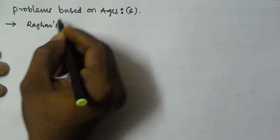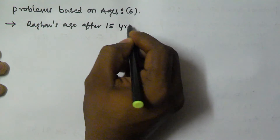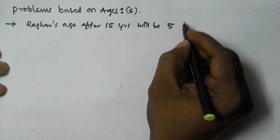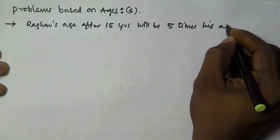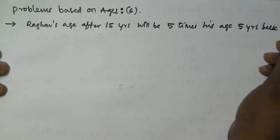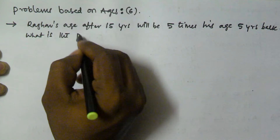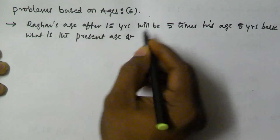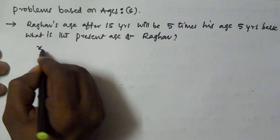Rago's age after 15 years will be 5 times his age 5 years back. Then what is the present age of Rago? So let us assume the current age of Rago is x years.